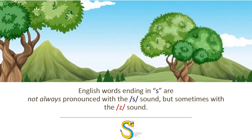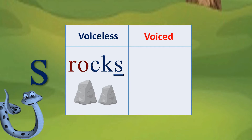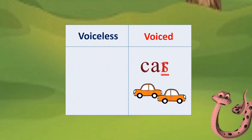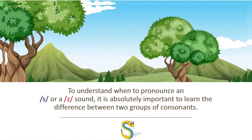English words ending in S are not always pronounced with an S sound, but sometimes with a Z sound. To understand when to pronounce an S or a Z sound, it is absolutely important to learn the difference between two groups of consonants.